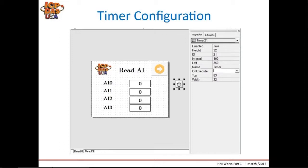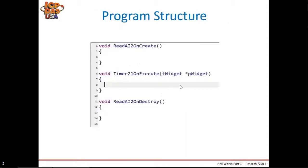To actually read the analog inputs periodically, we can add a Timer from the system toolbox to execute code at a fixed interval. The timer will not be shown during runtime and doesn't need to be placed on the frame. Clicking once to select the timer widget, we can change the properties in the inspector. Make sure that the timer is enabled and set the desired interval — in this example, we will use 100 milliseconds. Clicking on the three dots of the onExecute event handler, or clicking twice on the timer widget, will open the code editor.